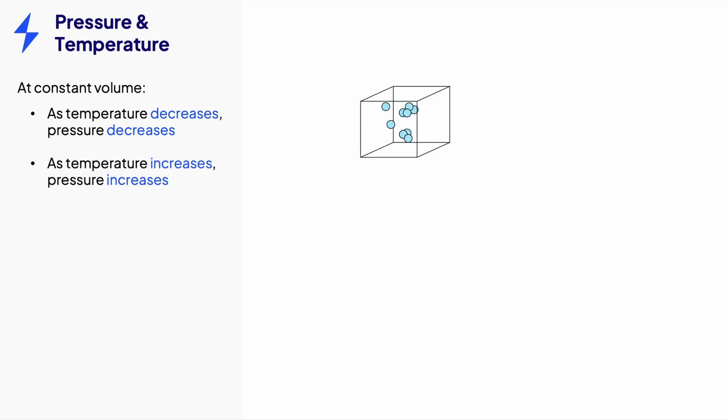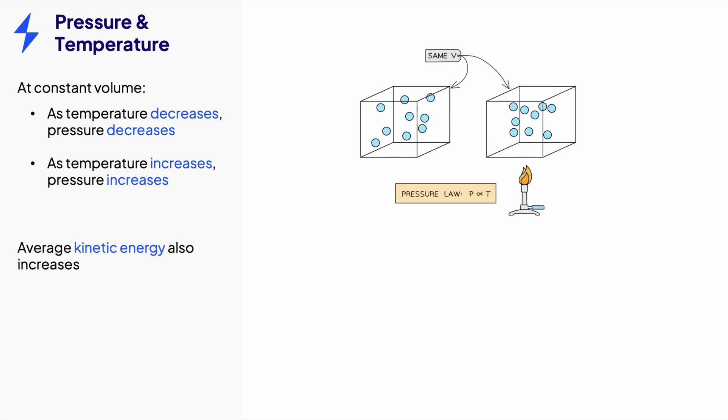This is due to the particles moving faster, since again, the pressure is the force per unit area which is proportional to the rate of these collisions. As this rate increases, the pressure also increases. Since kinetic energy is proportional to the temperature, the average kinetic energy of the gas also increases.